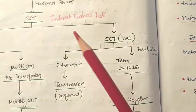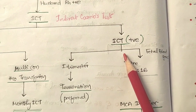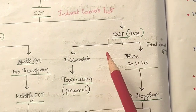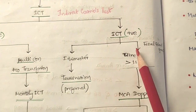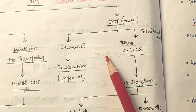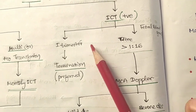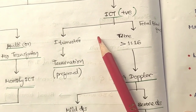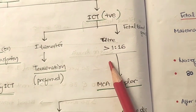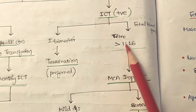Now, what if the indirect Coombs test is positive? We must assess the trimester. If the mother is in the first trimester with a positive ICT, the preferable management is to terminate the pregnancy, as it is difficult to continue safely.